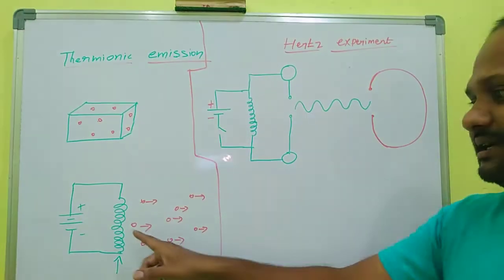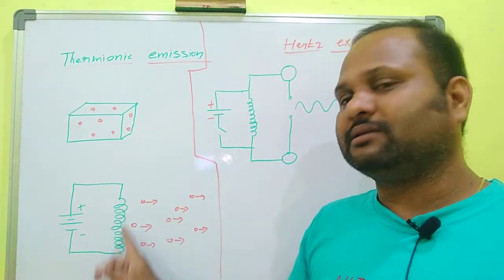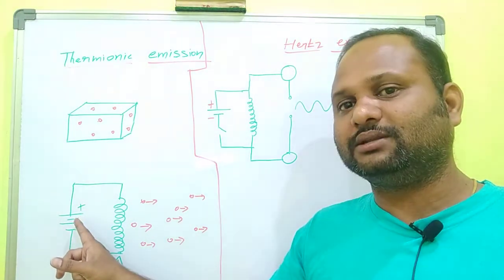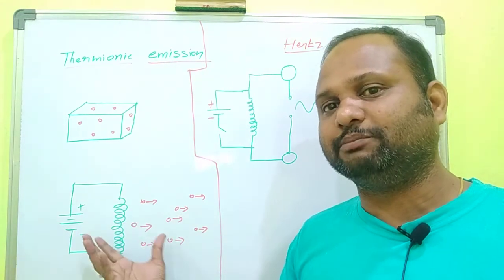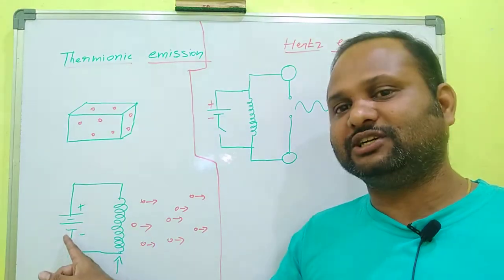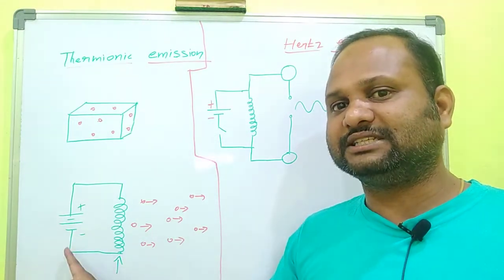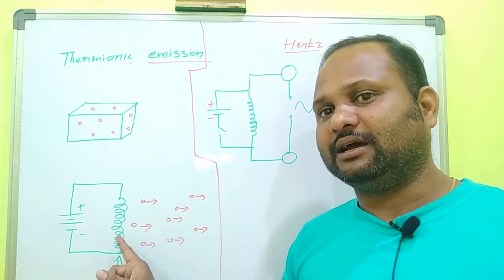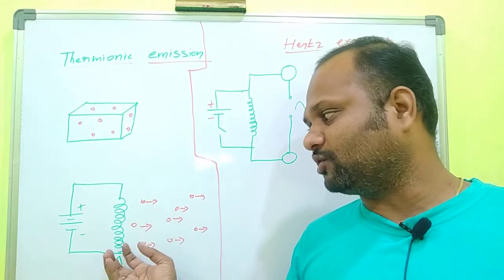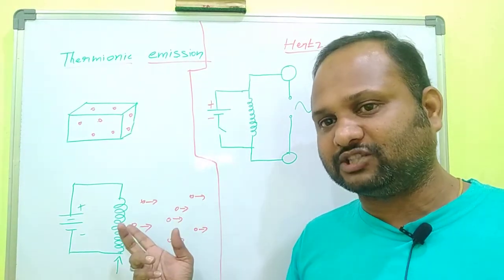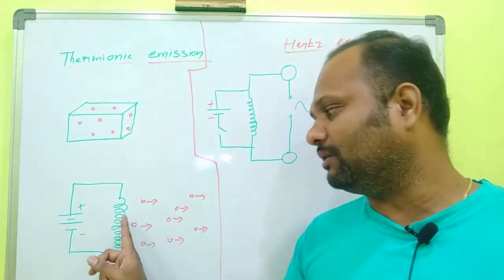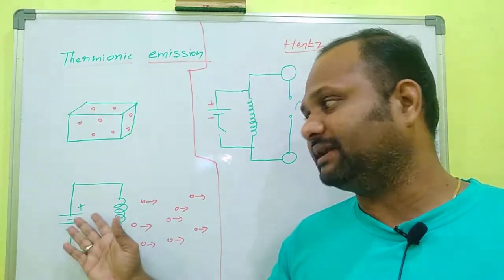Let us consider here an inductive coil which is connected to a battery. When the battery is switched on, current passes through the inductive coil and it is heated up. This is a very good conductor which is heated up due to the external source, giving thermal energy to the coil. When the coil heats up, the electrons present inside the coil absorb sufficient energy to overcome the potential barrier, and the electrons leave the metal.